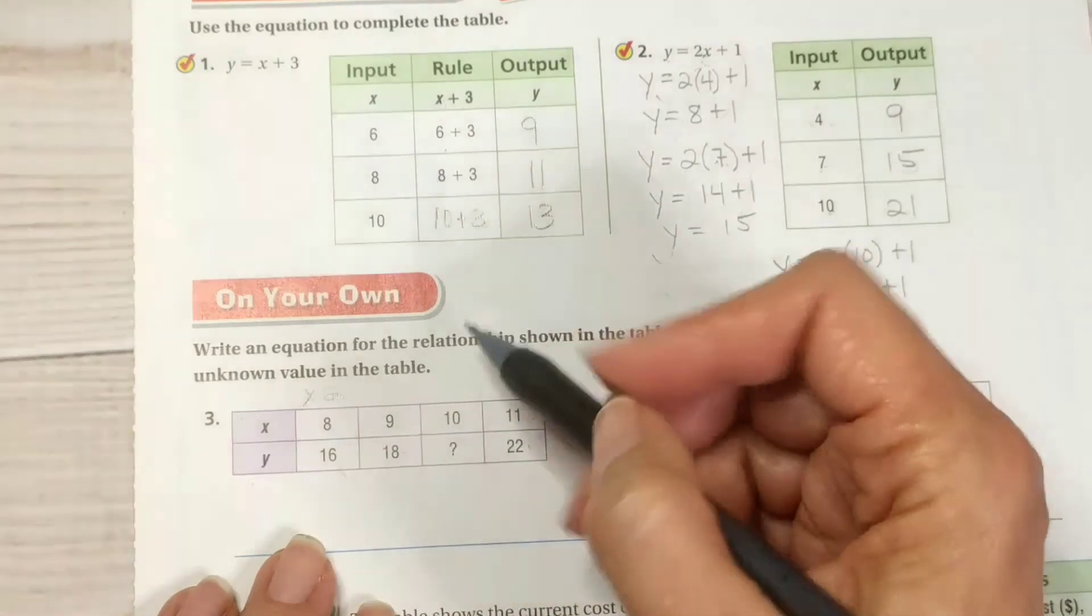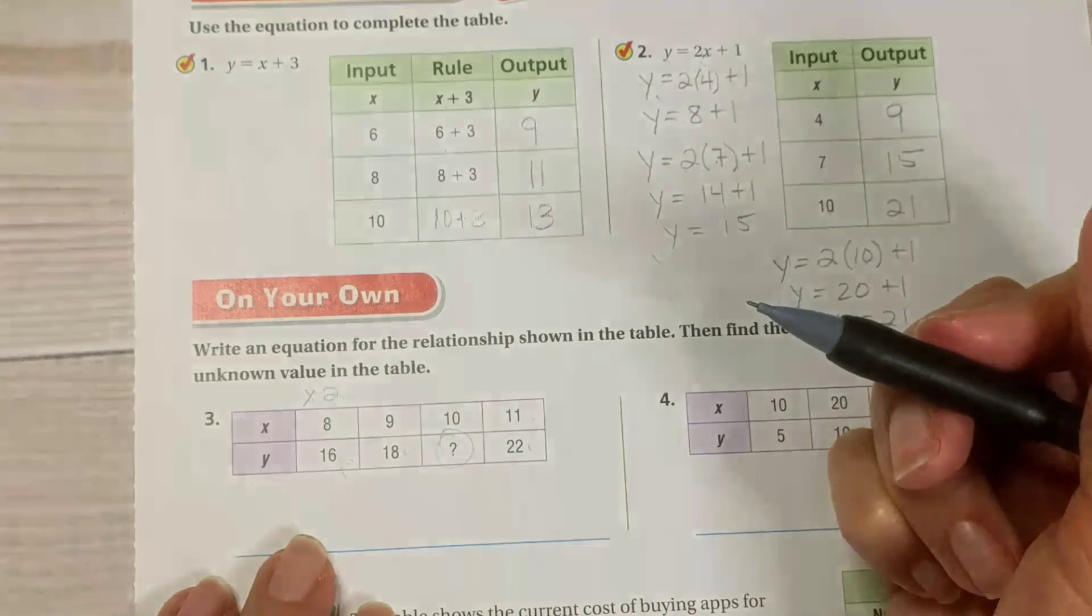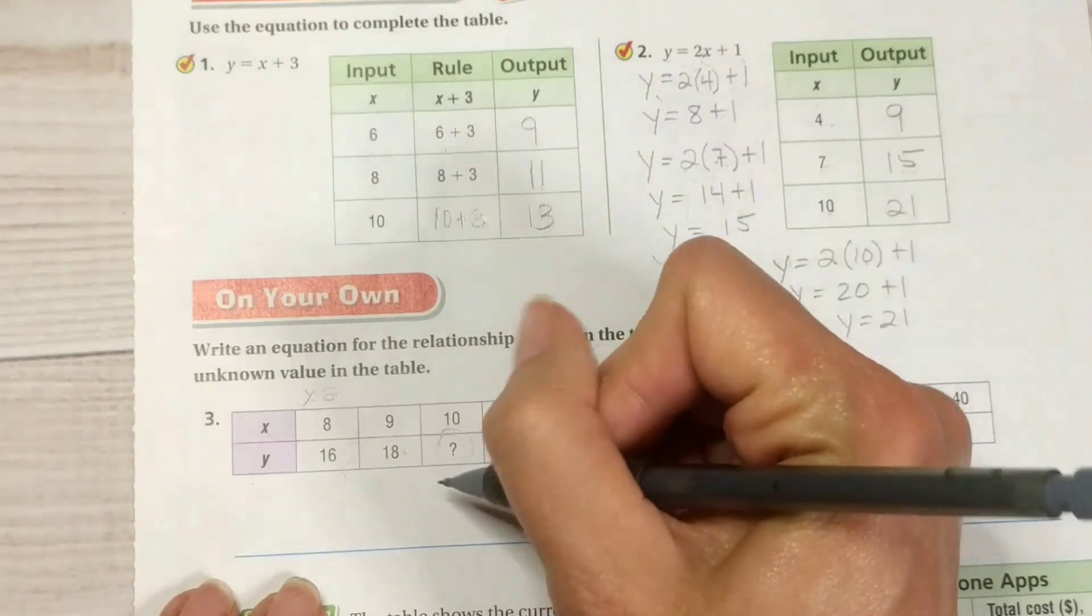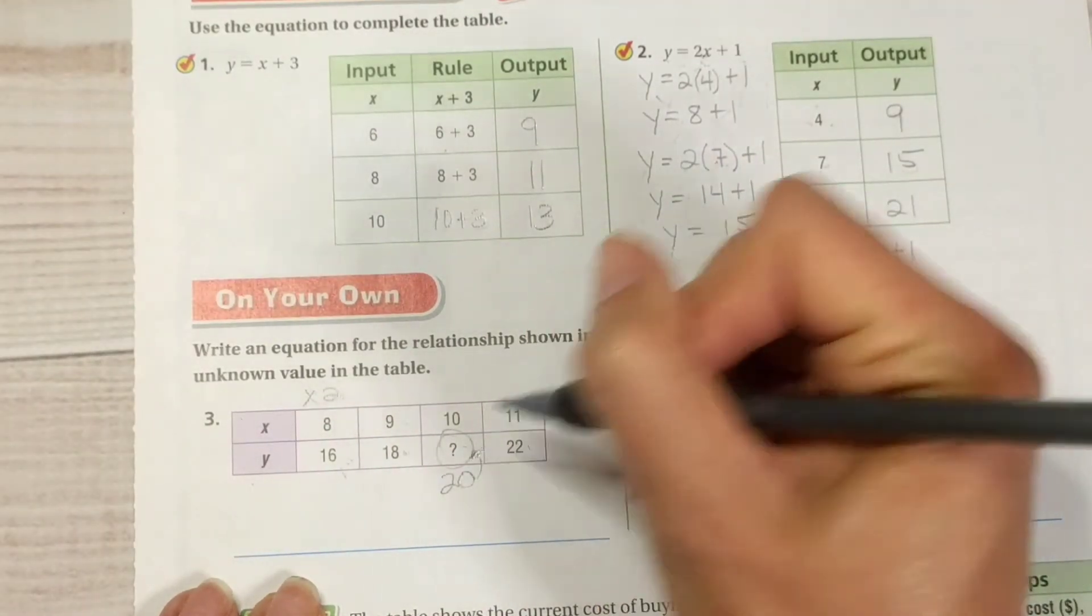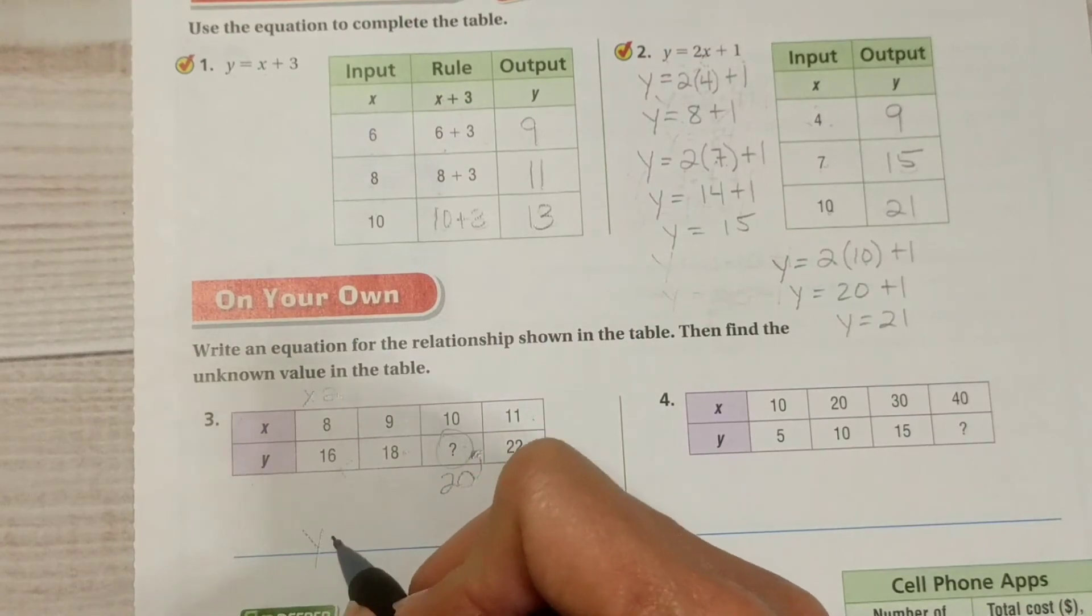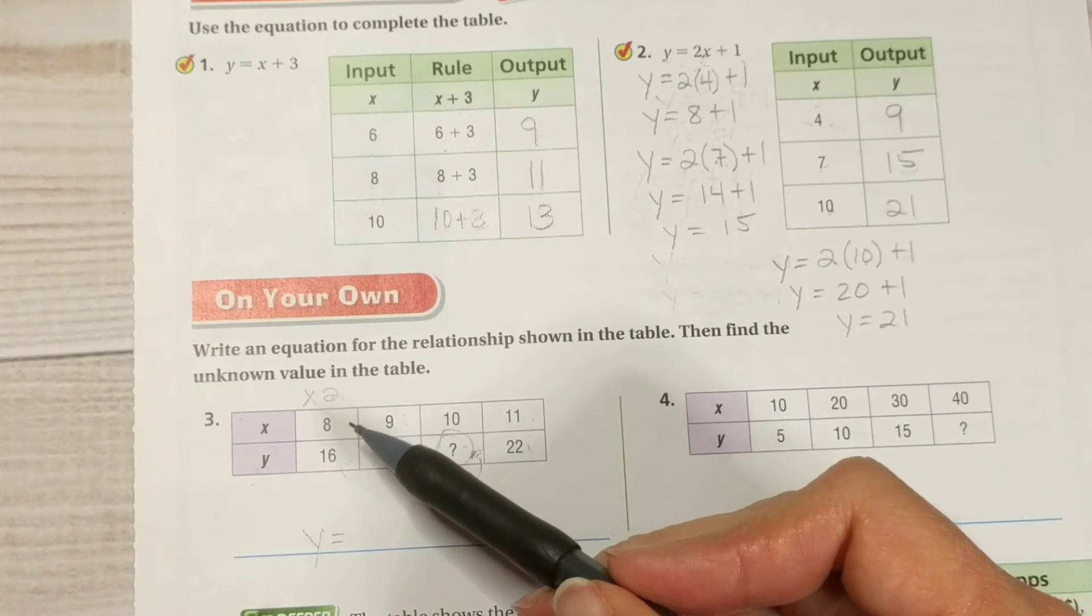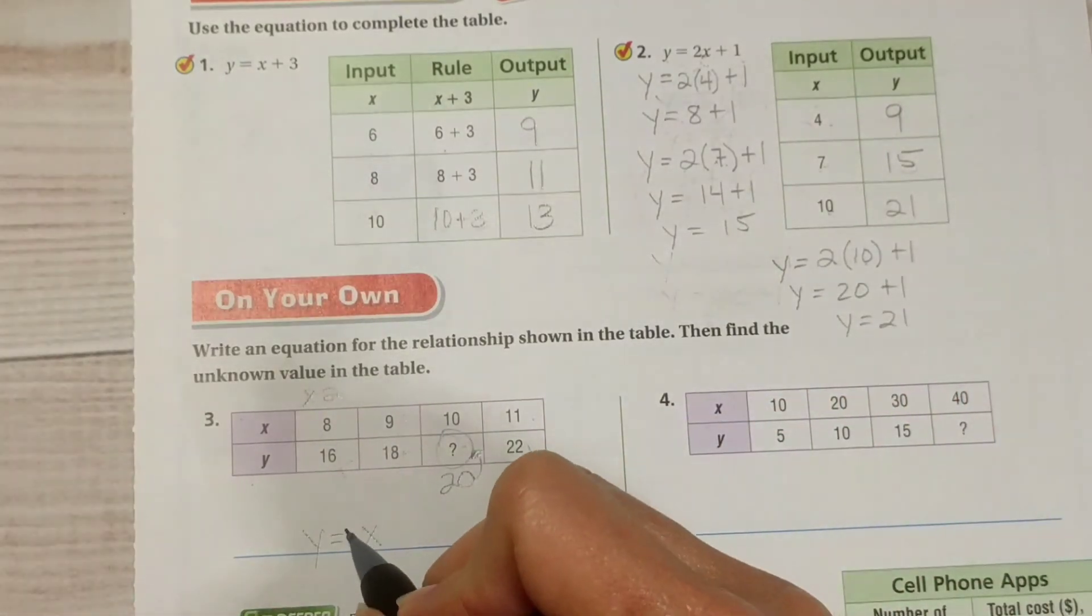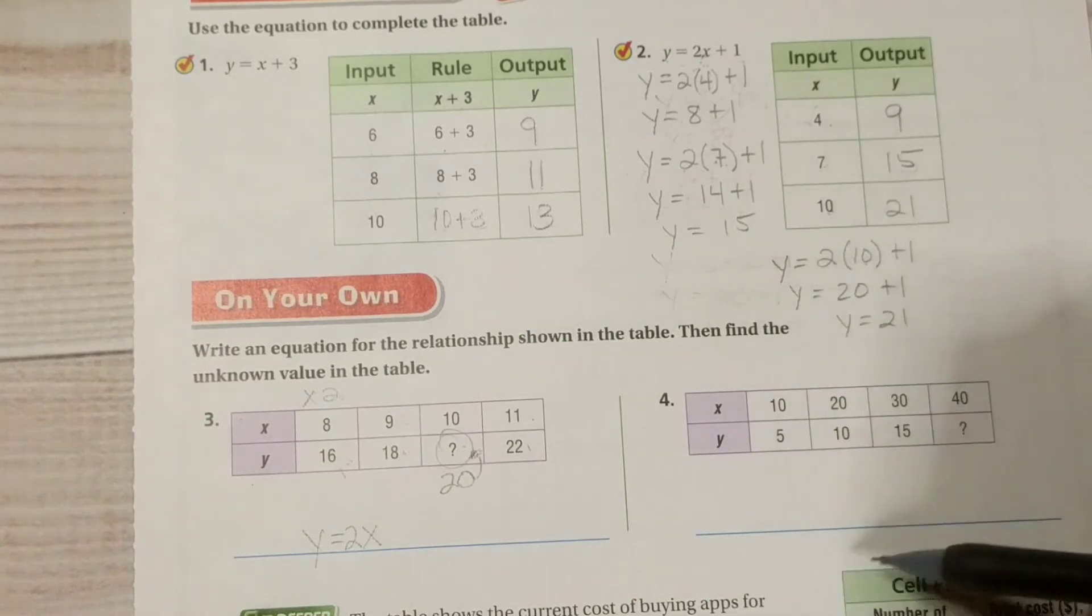So, if we're going to write our equation, we know we're working with times 2. All right. So, 8 times 2 gives me 16. 9 times 2 gives me 18 and so on. So, what is our value here? Well, 10 times 2 will give me 20. So, 20 is the missing value here. Let's write out the equation. Y equals X times 2. But we write that as 2X. So, Y equals 2X is our equation. I'll let you try this one on your own.